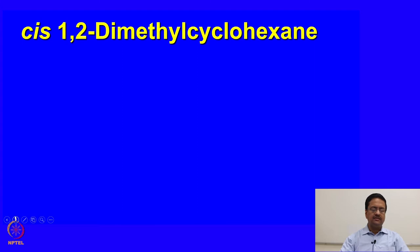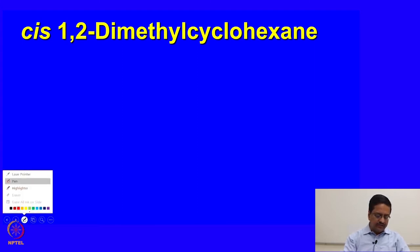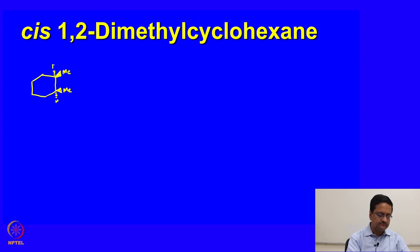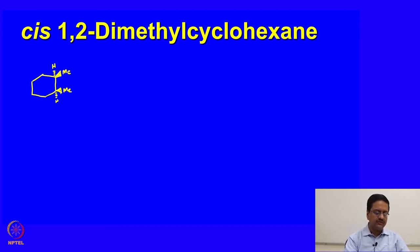We would like to start with cis-1,2-dimethylcyclohexane. When we write cis-1,2-dimethylcyclohexane, as you may recall from previous knowledge, we used to write cyclohexane as a hexagon. When you say cis, that means you have two methyl groups on adjacent carbon atoms with both of them upwards and the corresponding hydrogens downwards. When we try to draw this molecule in the chair form, we should remember that both methyl groups should remain in the upward direction. If we draw cyclohexane in chair form, we should draw this 1,2-dimethyl in this fashion.